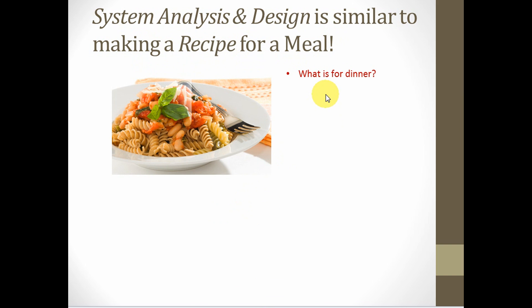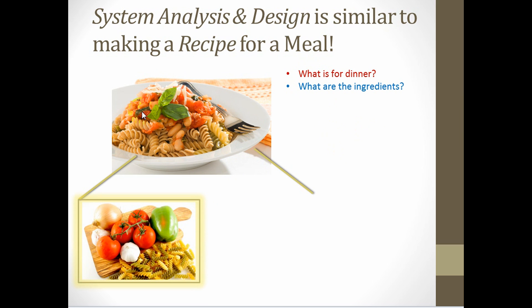Whenever we want to make a recipe, first we need to know what we are going to make. Suppose we're making a meal for dinner — we need to decide on the 'what.' The next question is what ingredients are needed. For example, if I'm making pasta, I need those specific ingredients. If it's spicy, the texture it should have, and all the flavors I want — all the ingredients are going to depend on those requirements, those flavor requirements.